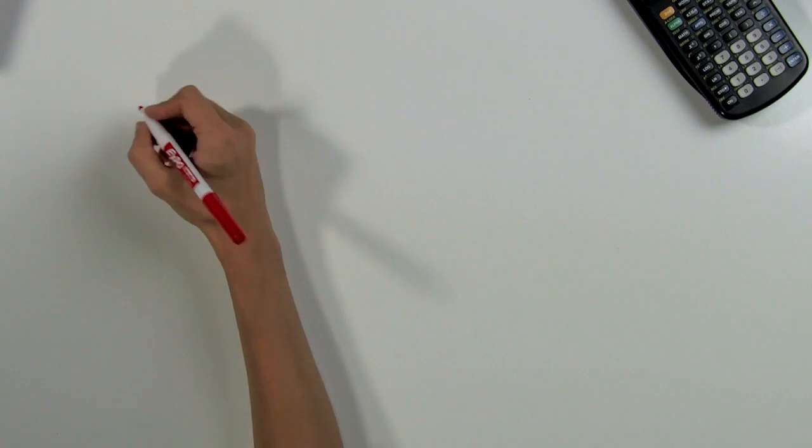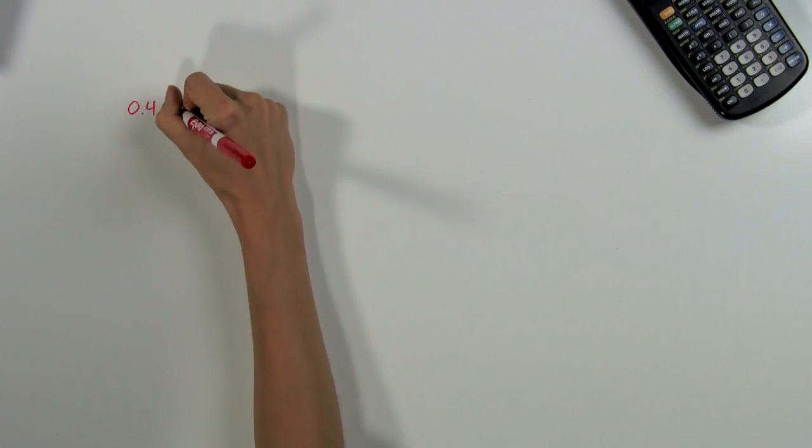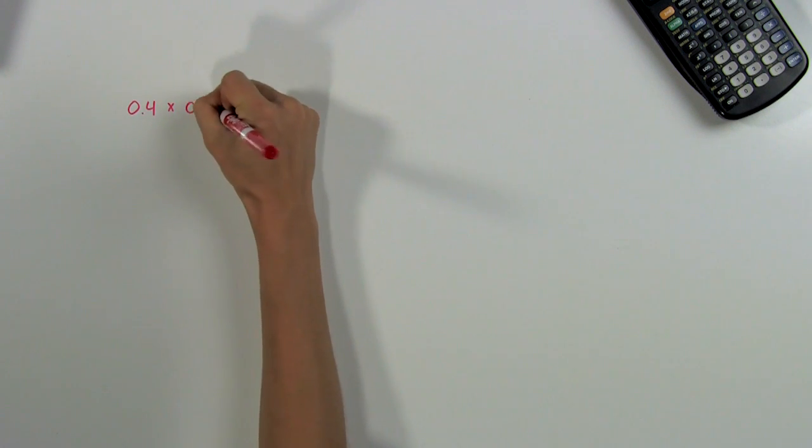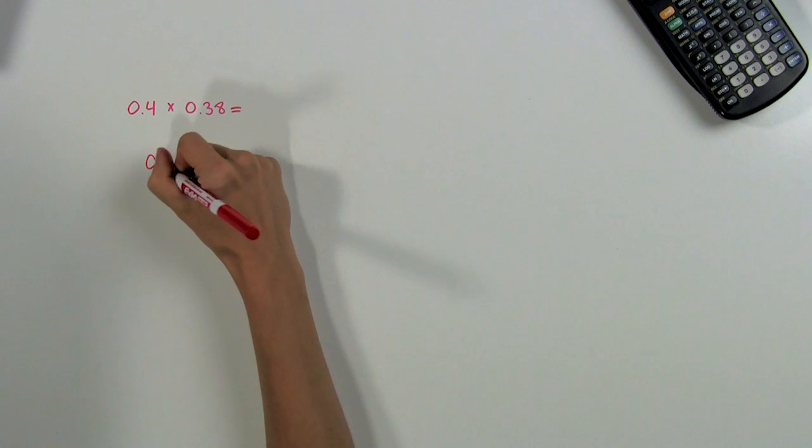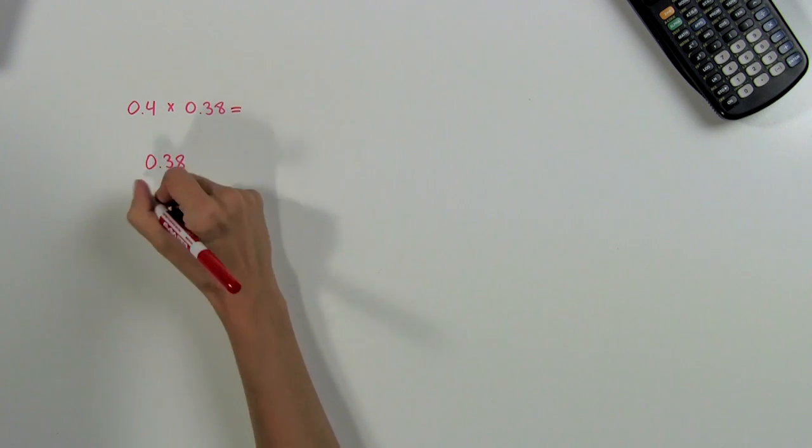So let's look at an example. Suppose we need to multiply four tenths and thirty-eight hundredths. In decimal notation, this will look like 0.4 times 0.38. We set up our multiplication problem the same way as usual: we write the longer number on top and the shorter number on the bottom.